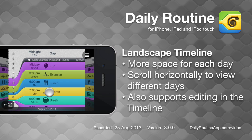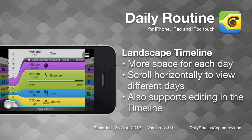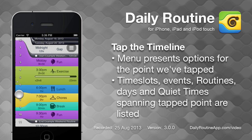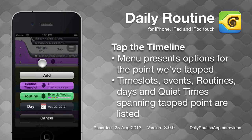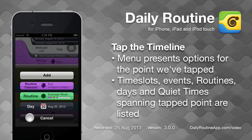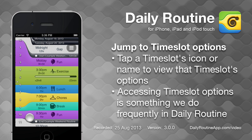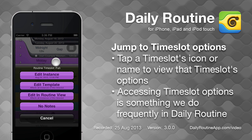To return to the current date, tap the clock icon. When we tap in the timeline, we see the time slots, events, and routines at the point we've tapped, each of which have their own options. Time slot options can be accessed directly by tapping the time slot's icon or name.